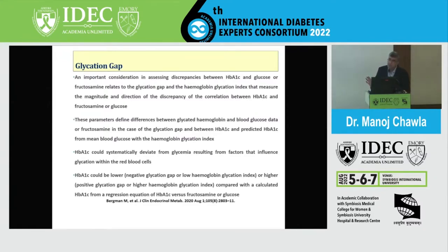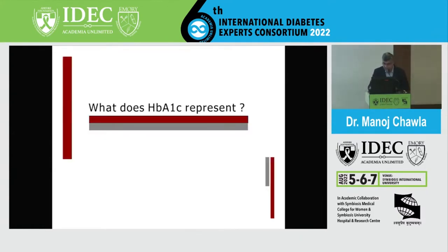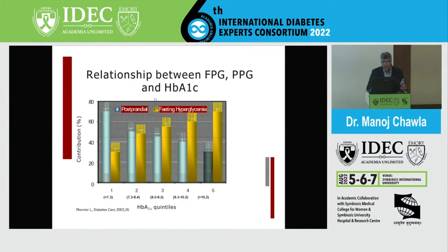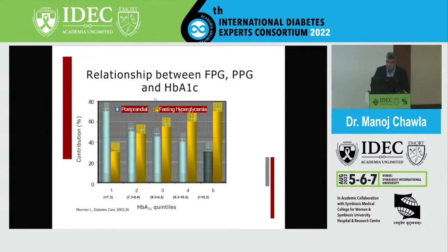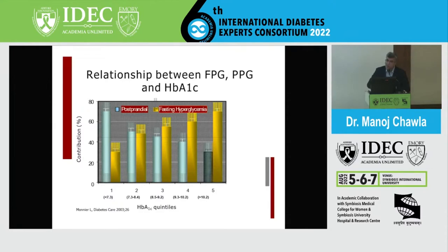Though HbA1C is the gold standard it has its own limitations. HbA1C represents a flux between fasting and postprandial glucose. As Monnier showed, when HbA1C is higher — closer to 10% — the fasting plasma glucose contributes almost 70 to 80% of that value. As HbA1C approaches the target range closer to 7.5–8%, it is predominantly postprandial sugar that contributes. So the contribution of fasting versus postprandial is not uniform across HbA1C levels.